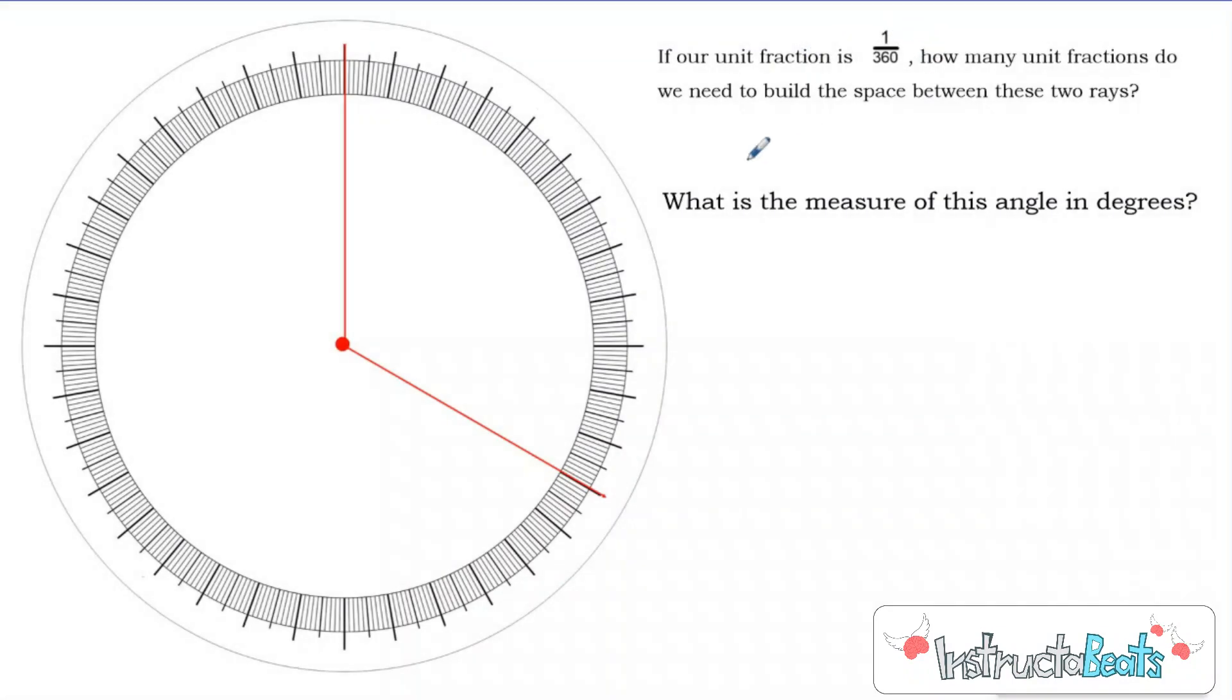Let's take a look at another one. If our unit fraction is one out of three hundred sixty, how many unit fractions do we need to build the space between these two rays? So again, I just started up here to make it kinda easy, so I'll make that a zero. And then ten, twenty, thirty, forty, fifty, sixty, seventy, eighty, ninety, right? That would be one fourth of my circle would be equal to ninety degrees. One hundred, one ten, one twenty. So I would need one hundred twenty out of three hundred sixty unit fractions to build the space between these two rays, or that would be one hundred twenty degrees. And don't forget your little degree symbol up here. Now one thing you want to be careful of, you don't want to write it kinda down like this, because then you might think that's one thousand two hundred, which would be completely wrong. So it's just a little circle up above that very last digit that you write.